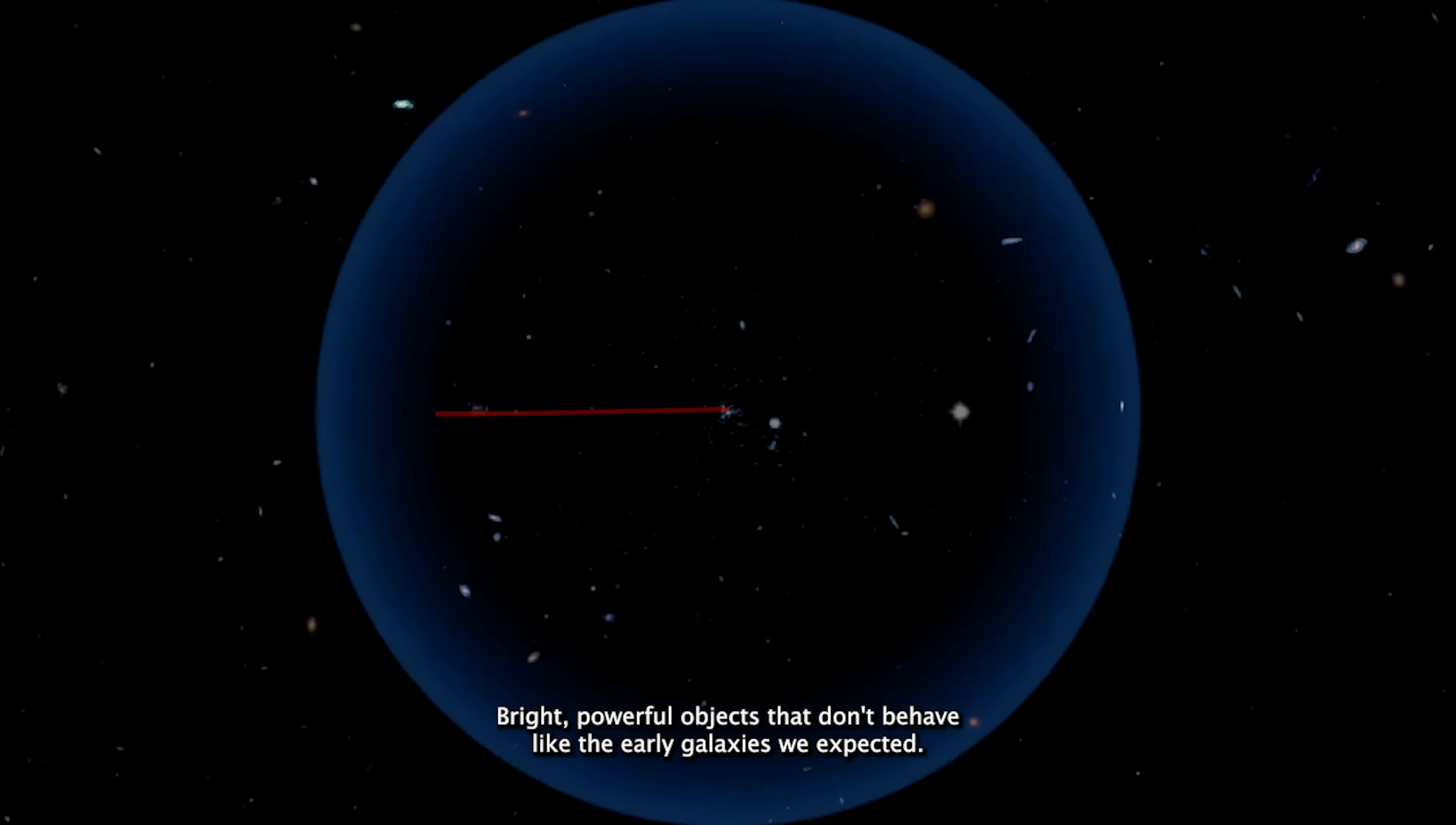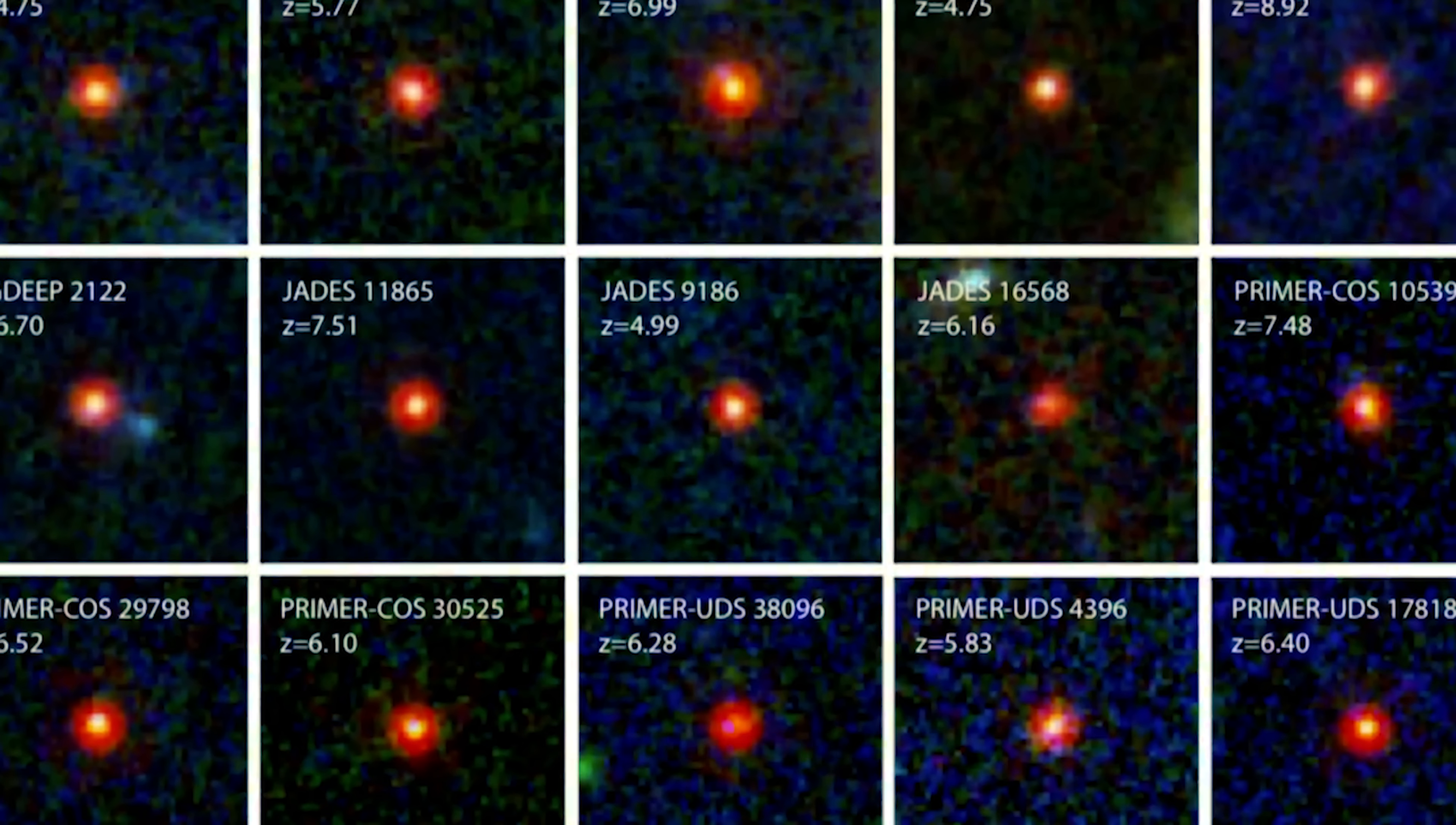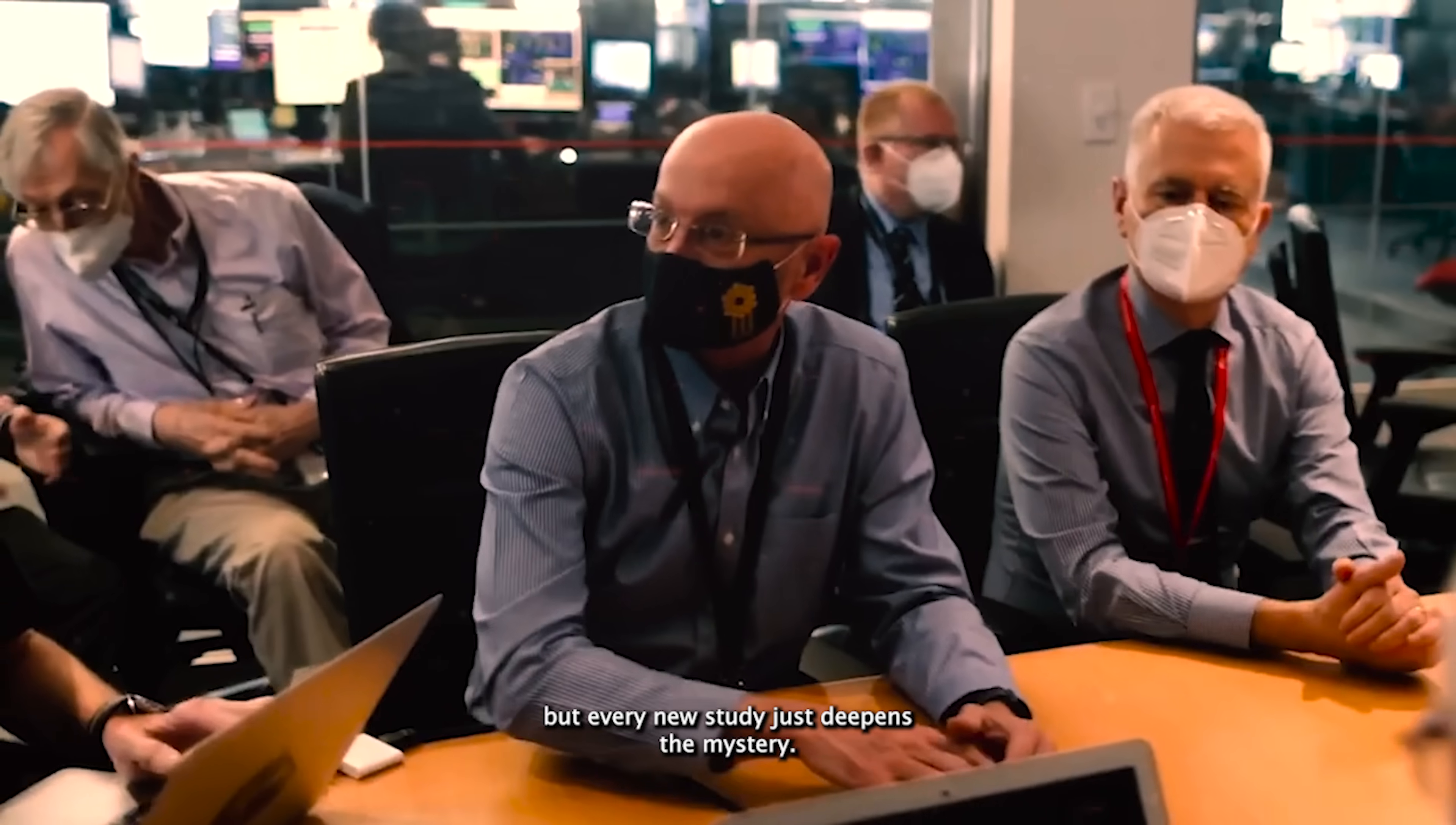Bright, powerful objects that don't behave like the early galaxies we expected. These aren't just a few cosmic oddballs. They're everywhere Webb looks in that deep, ancient region of space. Scientists have tried again and again to understand these anomalies, but every new study just deepens the mystery.